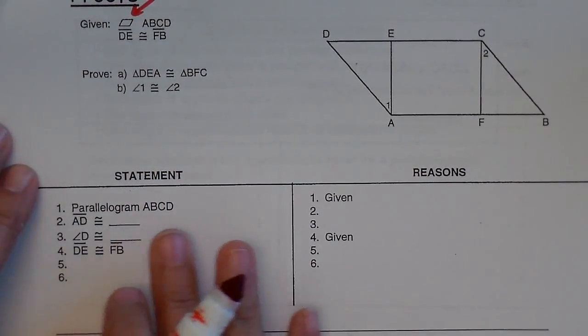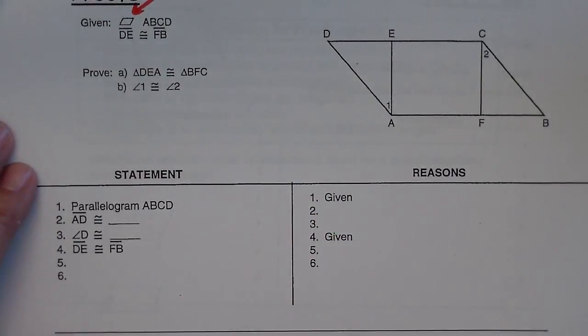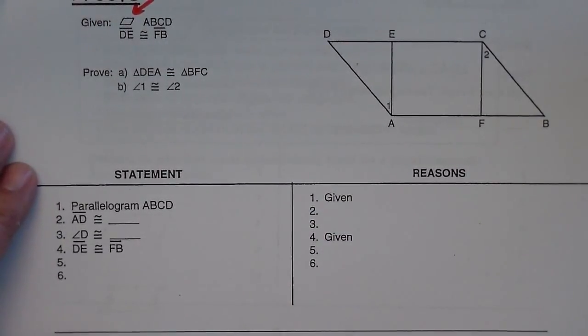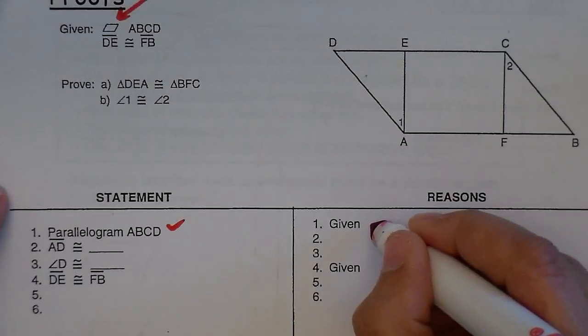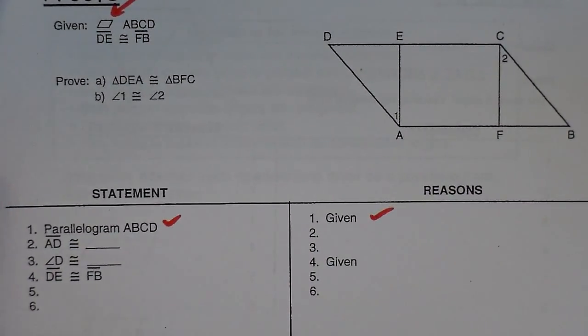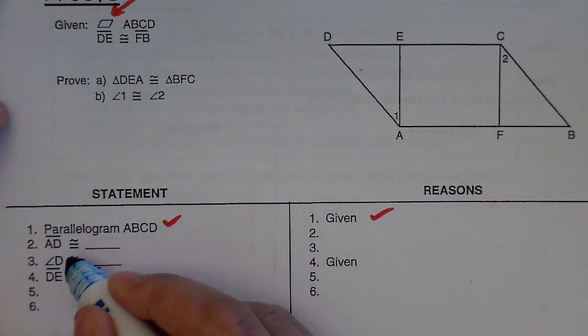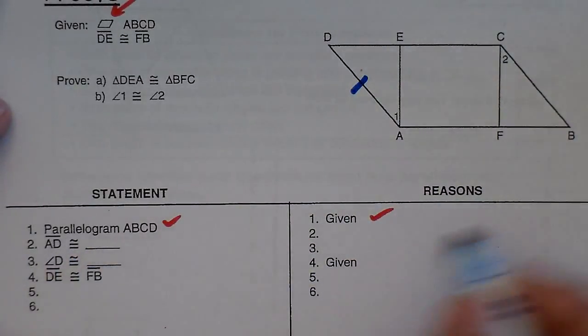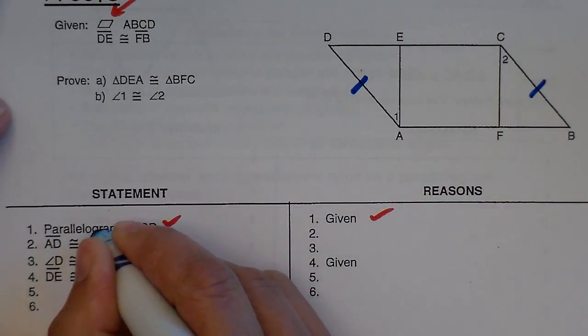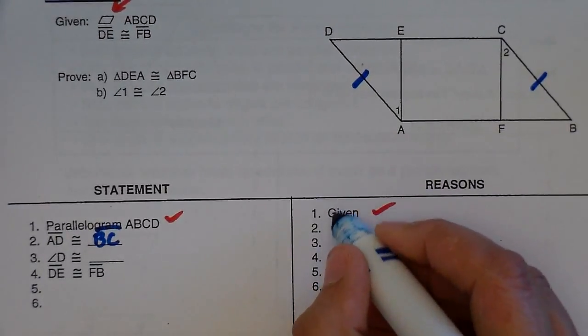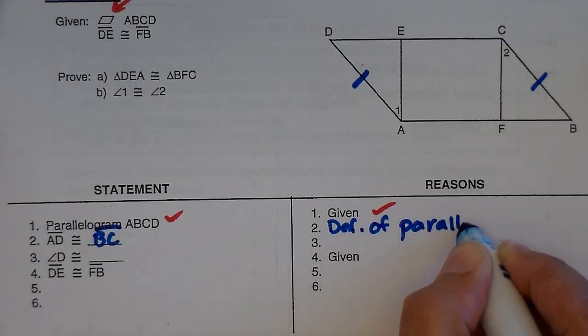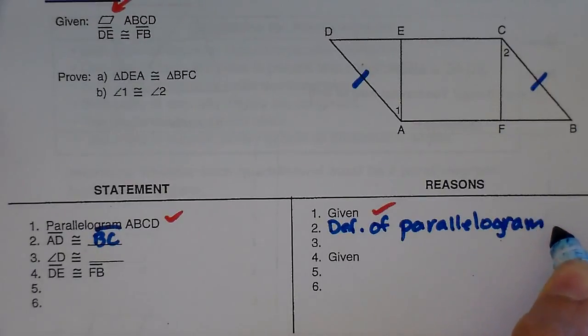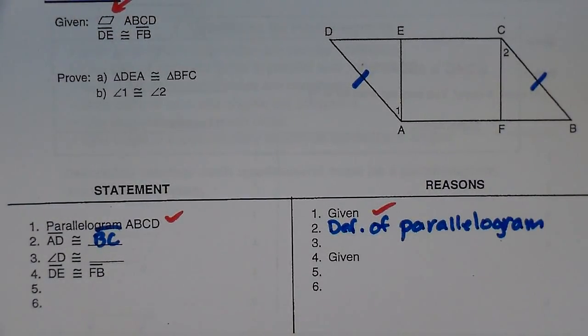What always goes first in your proof? The given. The given always goes first. So I'm going to state the first given, which is that it's a parallelogram. That creates all of these properties for us. So now that I know it's a parallelogram, I know that AD has to be congruent to BC. And that's because of definition of a parallelogram, which says if it's a parallelogram, then the opposite sides are congruent.